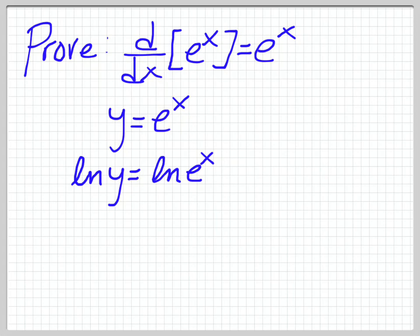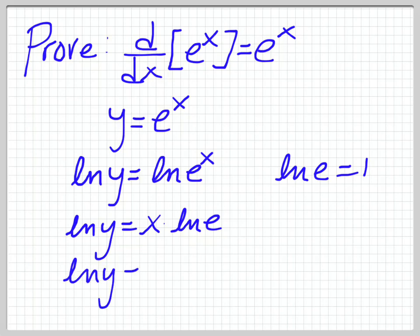So what we can do is we can now go ahead and use our rules of logs to make this a little bit easier. So ln of y is equal to x times ln of e. Now of course, ln of e is equal to 1. So we can get rid of that guy and we can just have ln of y is equal to x.